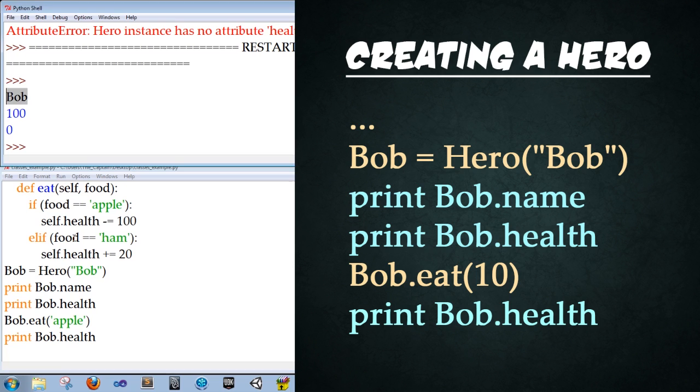So what's returned to us? Bob, the name is returned first. Excellent. That's what we'd expect. And then Bob's health is returned at 100. He eats the apple, which he's allergic to, and then he has zero health. Perfect. Let's go ahead and punch in ham in here to make sure that our ham is working. Ham. Save. F5 to run. Perfect. We get 120 health. Excellent.